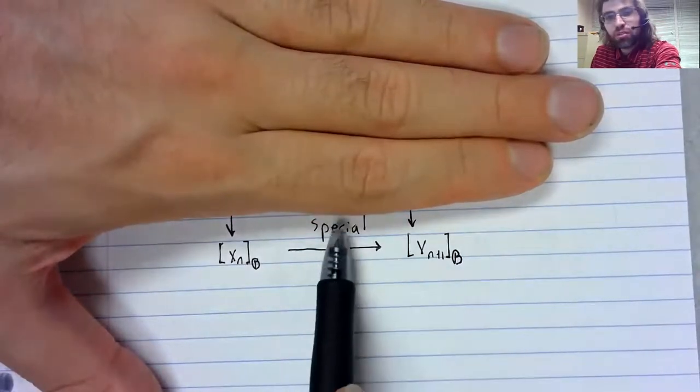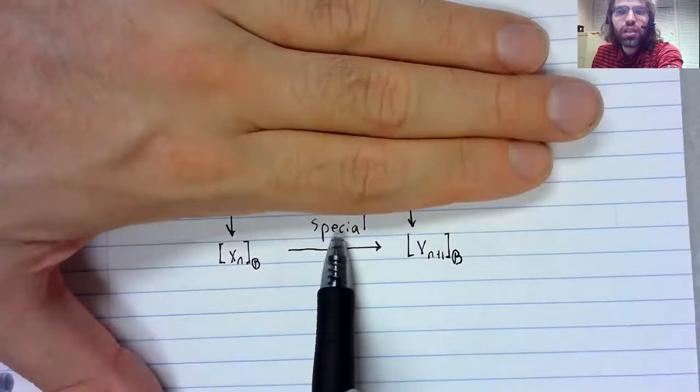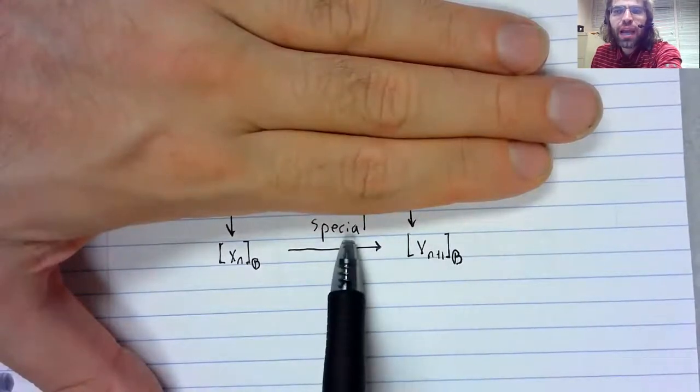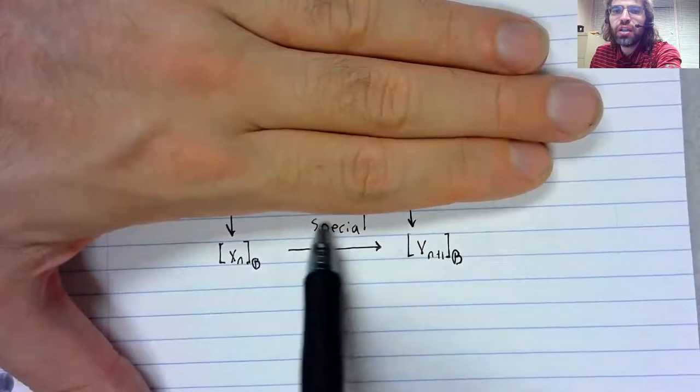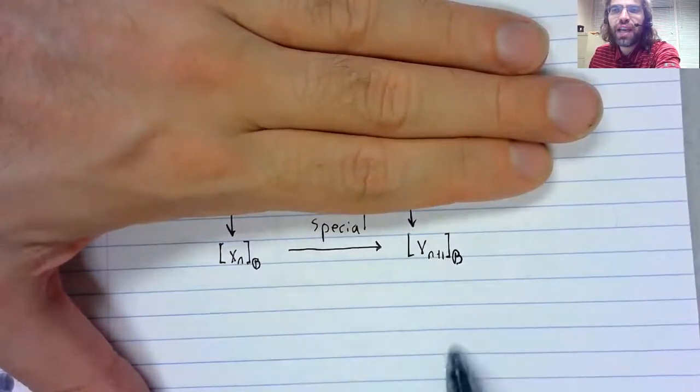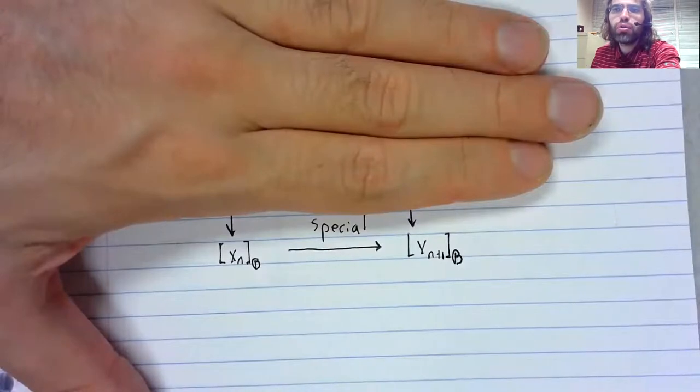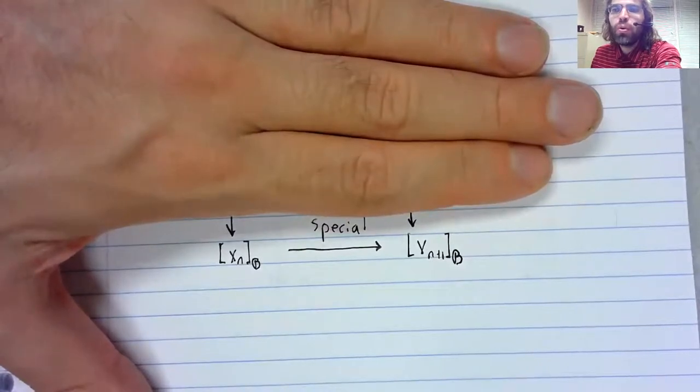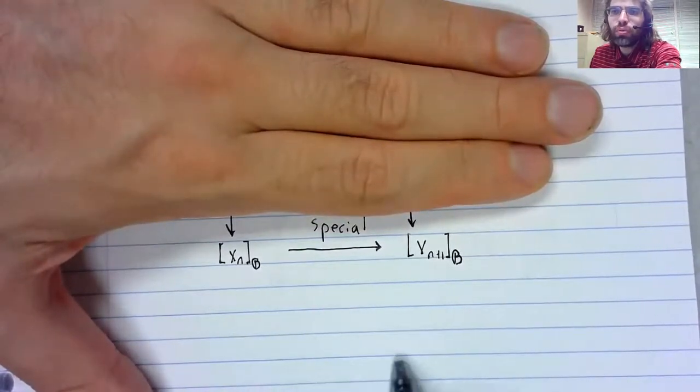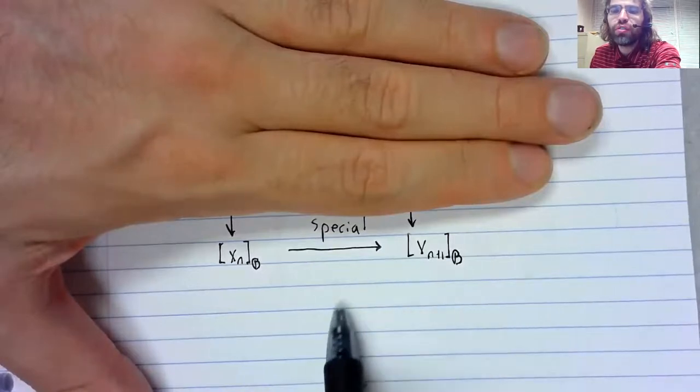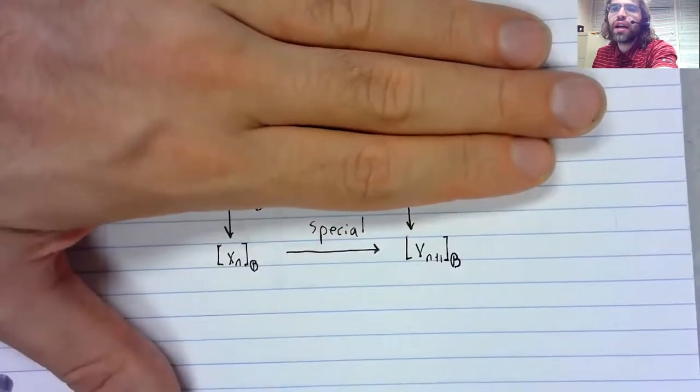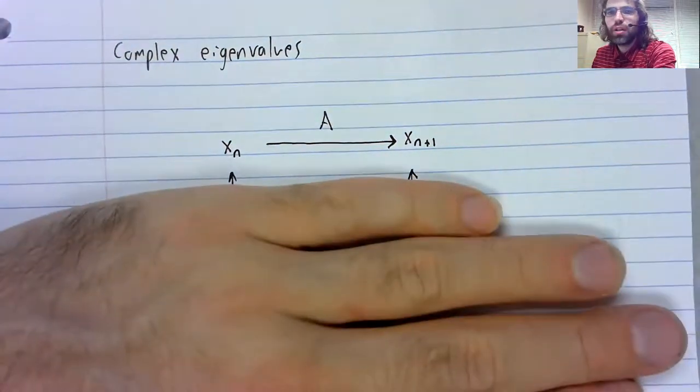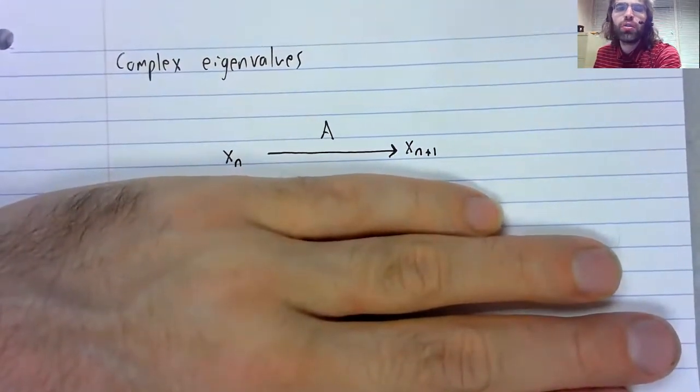This dynamical system and this dynamical system are the same in every way that matters. And because we have a special matrix down here, we know what is happening. As time passes, we have rotation and we have scaling. We're either rotating out or rotating in, in a spiral pattern, or we're forming a circle or some other kind of closed figure. And because isomorphic objects are identical, that's what's happening up here as well.